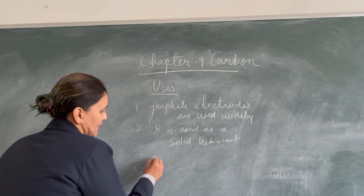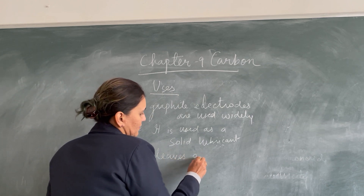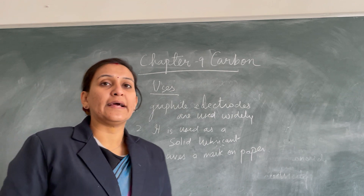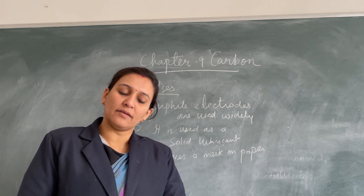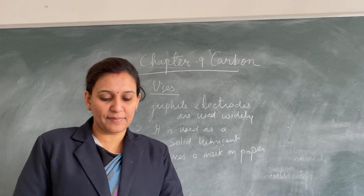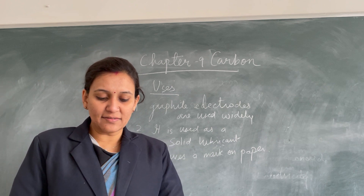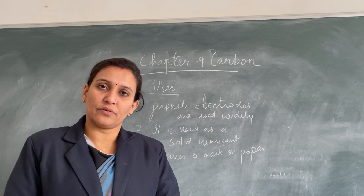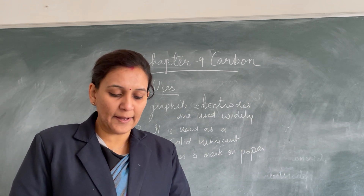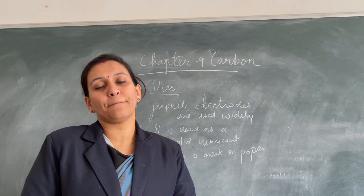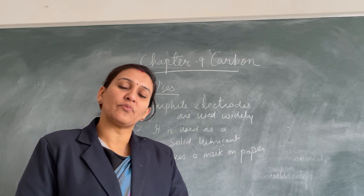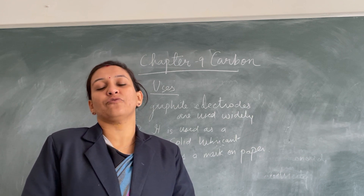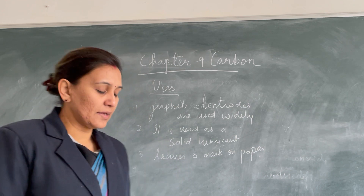Third, graphite leaves a mark on paper. In fact, the lead of a pencil is made of a mixture of graphite and clay. Since graphite is very soft, it is mixed with clay. The greater the proportion of graphite, the softer is the pencil. The term 'graphite' is derived from a word meaning 'I write.'